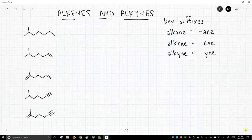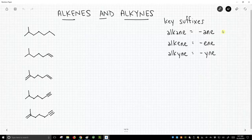So in all of our molecules so far, we've had a key suffix up in the upper right. We've had -ane, A-N-E, to indicate that we're dealing with alkanes. But now we're going to change our suffix to indicate that we have alkenes or an alkyne.